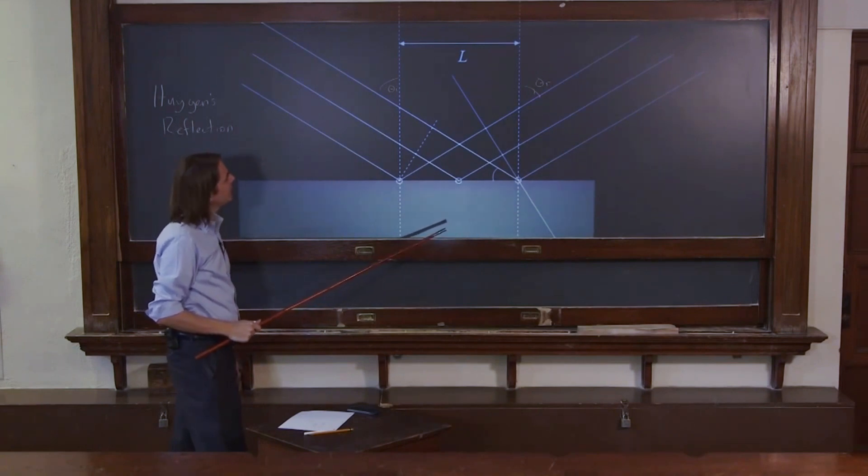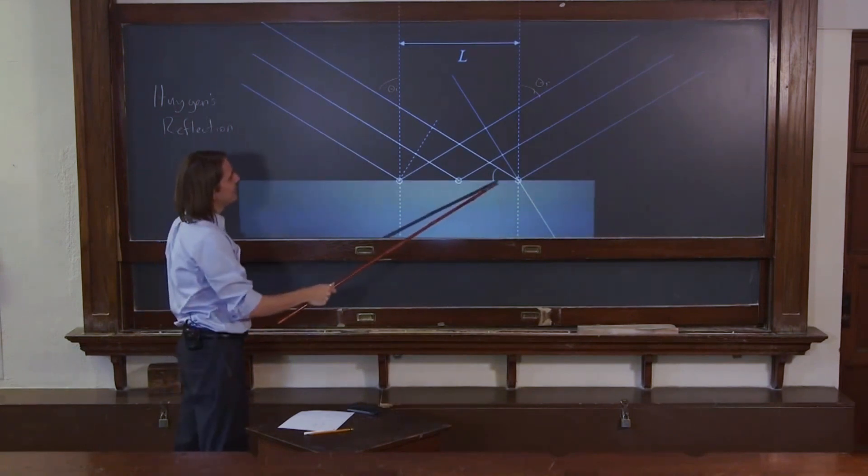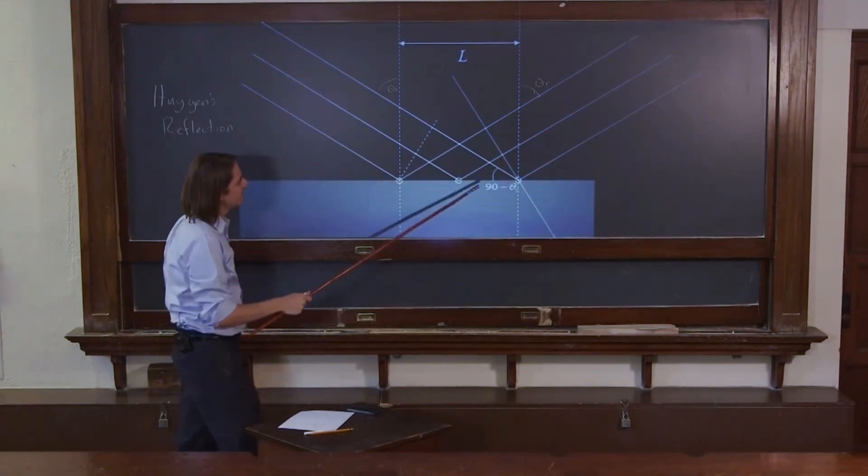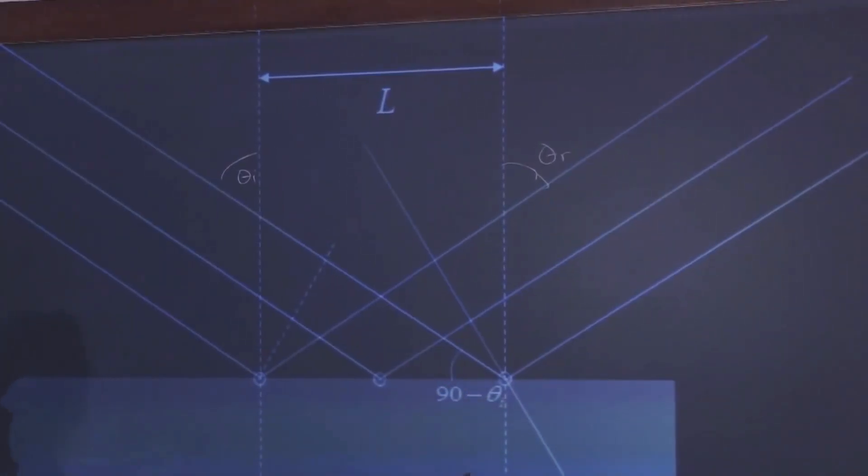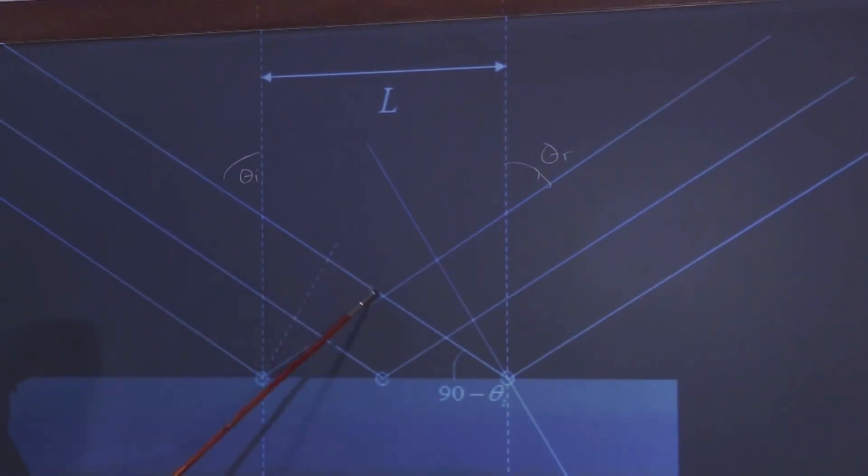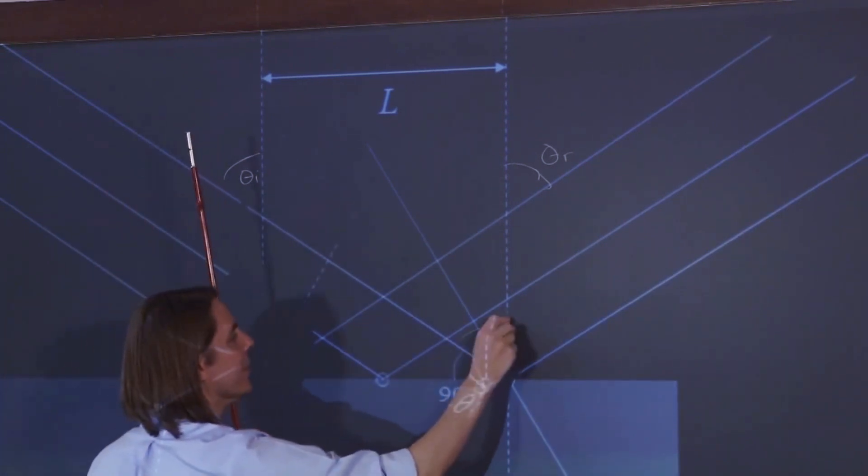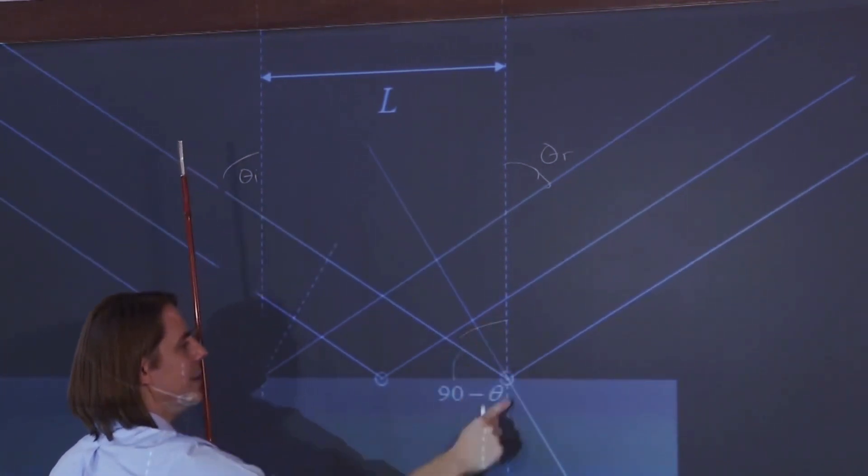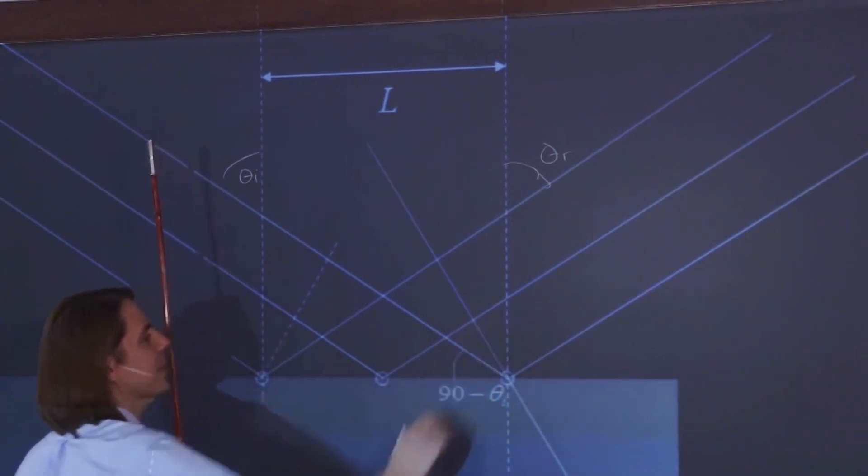We're going to say the separation between these is L, just some distance L between where the front wavelet hit and the back wavelet hits. And then we can also start to think about these angles. So you can actually see that this is 90 minus theta i, because if you can see the geometry here, we have two parallel lines. We have this line going at an angle between two parallel lines. So if that's theta i, then this is also theta i. And if that's theta i and this is 90 degrees, that's 90 minus theta i.